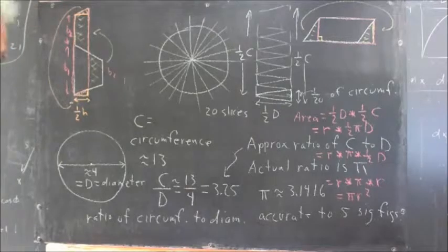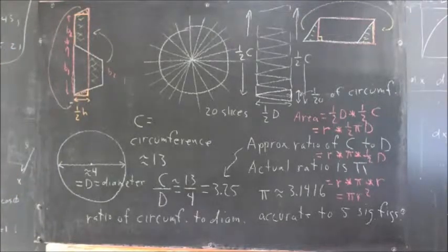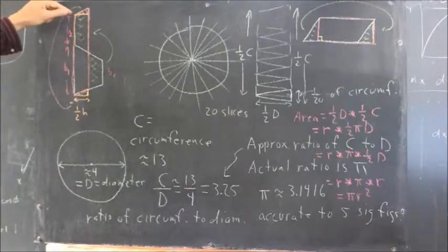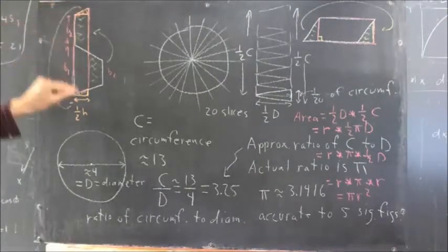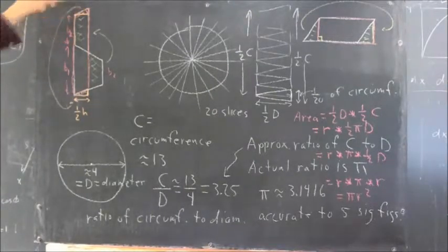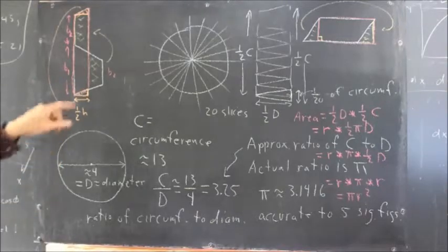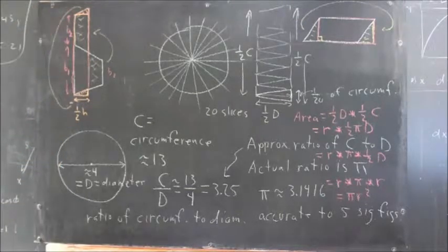We can then reform the parallelogram into a rectangle. We just trim off this piece up here and glue it on down here, rotate it around, glue it on down here, and now we have a rectangle.